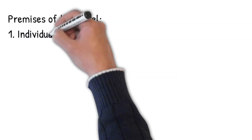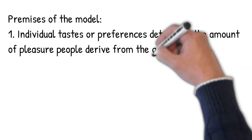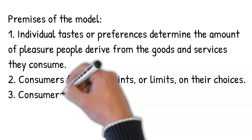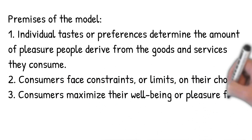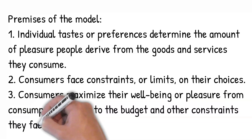We base our model of consumer behavior on three premises. Individual tastes or preferences determine the amount of pleasure people derive from the goods or services they consume. Consumers face constraints or limits on their choices. Consumers maximize their well-being or pleasure from consumption subject to the budget or other constraints they face.